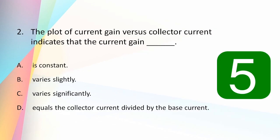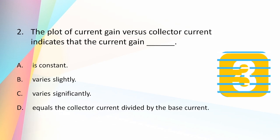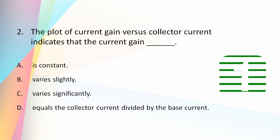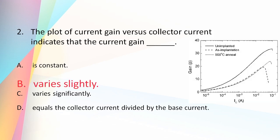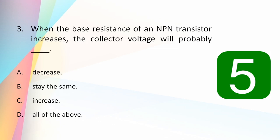The plot of current gain versus collector current indicates that the current gain: is constant, varies slightly, varies significantly, or equals the collector current? The answer is that current gain varies slightly with respect to the collector current, because at one stage it achieves the saturation point, indicating how much current gain we can expect from the device.